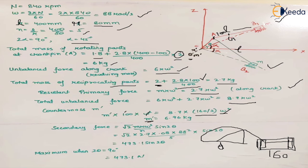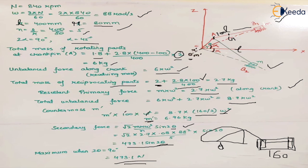For the resultant secondary force at 840 rpm, the formula is √2 × m × r × ω² × (1/n) × sin2θ. We know m, r, ω, and n = 5. Here α = 90 degrees but θ is the crank angle from the x-axis, not 90 degrees. The expression gives the force in terms of θ, and the maximum value occurs when 2θ = 90 degrees, i.e., θ = 45 degrees, yielding a maximum secondary force of 473.1 Newton.